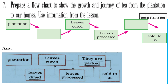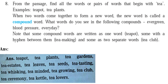The flow chart shows the journey of tea from plantation to home: first, plantation; then leaves are cut; then leaves are dried; then leaves are cured; then leaves are processed; finally, they are packed and sold to us.